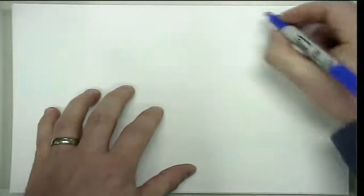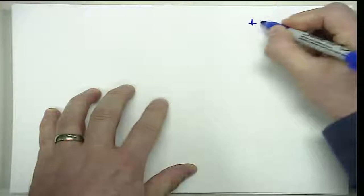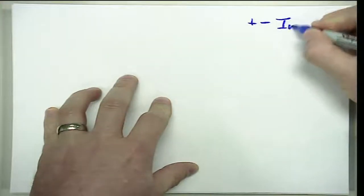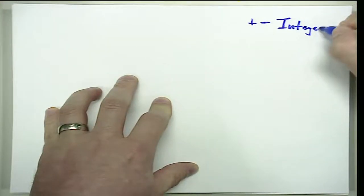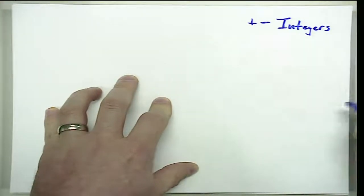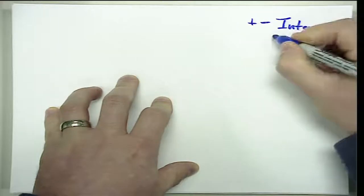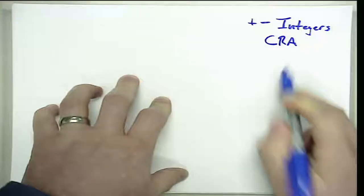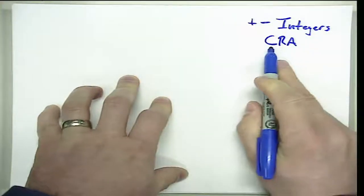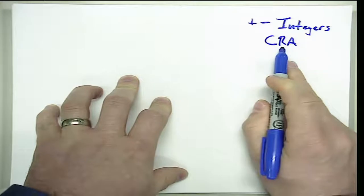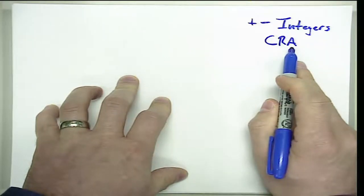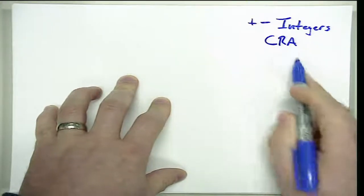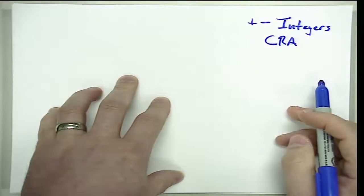In this video we're going to take a look at adding and subtracting integers, and we're going to do that across a CRA sequence of instruction. CRA stands for concrete, representational, abstract, and in this video we're going to run that entire progression.